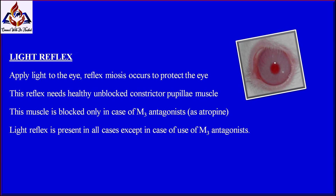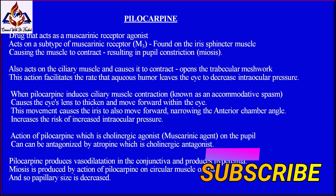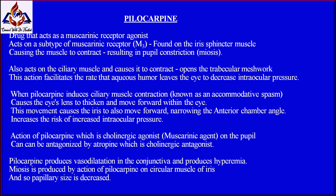Now the pharmacology of pilocarpine: pilocarpine is a drug that acts as a muscarinic receptor agonist, specifically on the M3 subtype found on the iris sphincter muscle, causing it to contract and resulting in pupil constriction — miosis. Pilocarpine also acts on the ciliary muscle and causes it to contract. When the ciliary muscle contracts, it opens the trabecular meshwork through increased tension on the scleral spur.